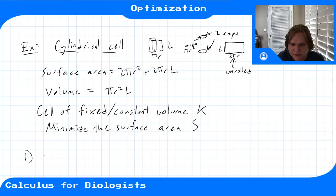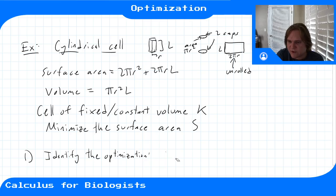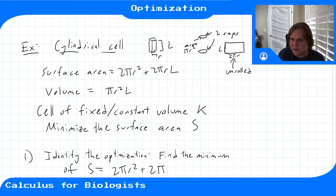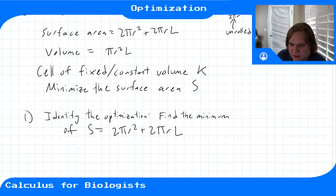Step 1 is to identify what we're optimizing. We want to find the minimum of S = 2πr² + 2πrL. The issue is that S is a function of both r and L — two variables. We only know how to do these optimization problems with one variable.